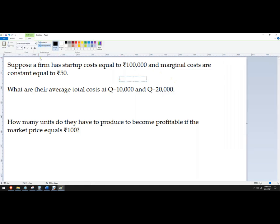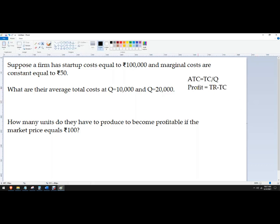Let's do a couple of formulas here. Average total cost is going to be the total cost divided by quantity. And then profit is going to be total revenue minus total costs. So we've got those.